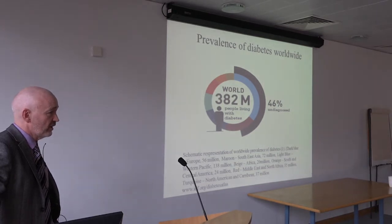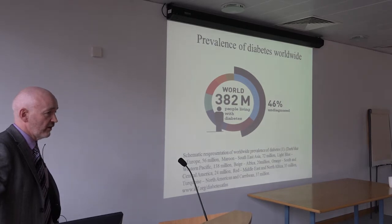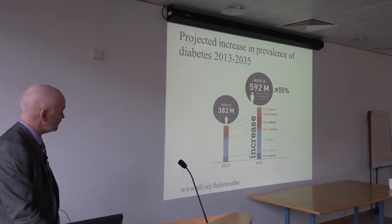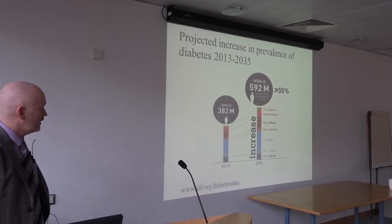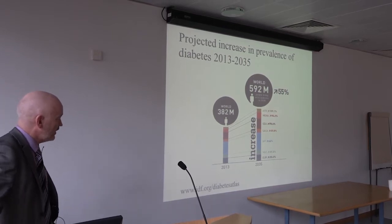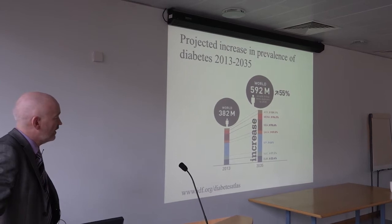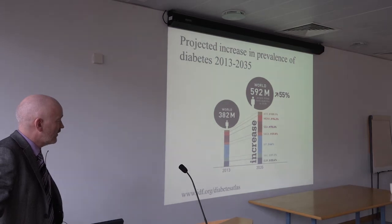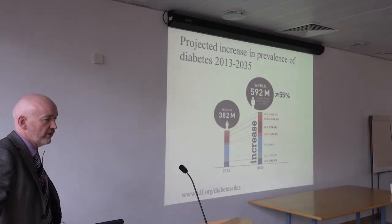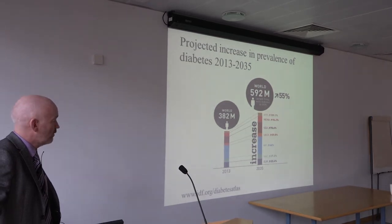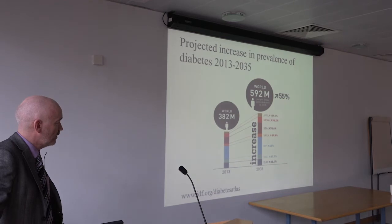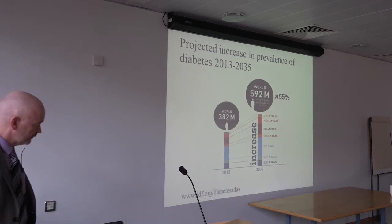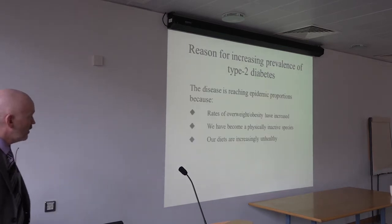The reason so many are undiagnosed is that the symptoms of type 2 diabetes come on very gradually, making it difficult to diagnose without awareness. From 2013 to 2035, a 55% increase in worldwide prevalence is projected. It's not just a Western problem — even in Africa there's an estimated 100% increase in diabetes cases over that 20-year period.